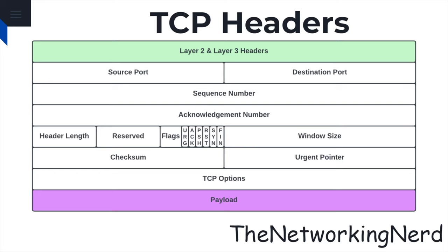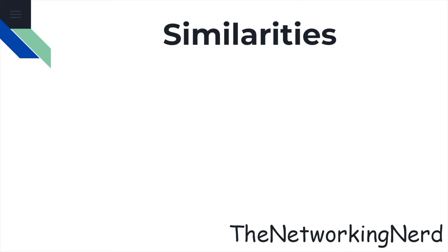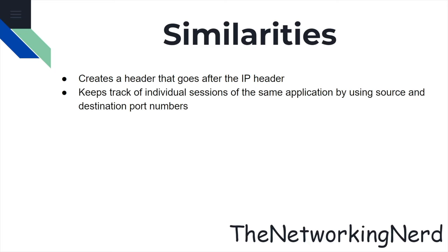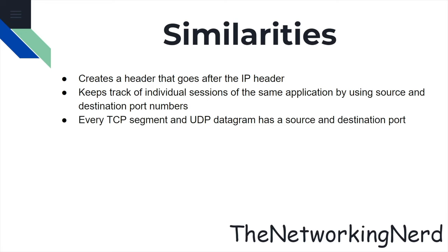In terms of similarities, both TCP and UDP create a header that goes before the IP header, and both keep track of individual sessions of the same application by using source and destination port numbers. Port numbers are logical entities used by applications to bind transport sessions, and they are created or destroyed based upon the needs of an application. Every TCP segment and UDP datagram has a source and a destination port. The destination port is typically a well-known registered application port, and the source port is randomly derived.